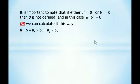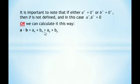It is important to note that if either a = 0 or b = 0, then θ is not defined. In this case, a·b = 0. Remember that when one of the vectors is zero, then θ is not defined, and in this case their dot product will be zero.